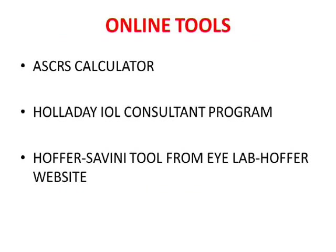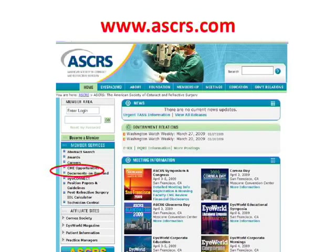Now let's start with the online tools. There are many online tools. The easiest to operate is the ASCRS calculator. There is also an Haigis IOL consulting program which needs to be purchased, and a helpful spreadsheet tool which is essentially an Excel sheet — it asks for whatever data you have, you feed in your values, and it gives you your result. Let's look at the ASCRS online calculator: you go to the website and in one corner it gives you the option of post-refractive IOL power calculation.